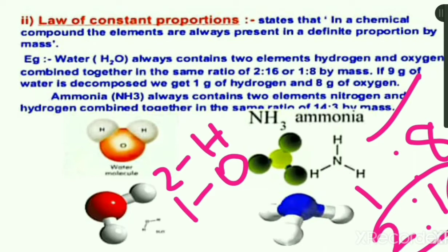The elements of water always combine in the ratio 1:8. If you take 9 grams of water and decompose it, you get 1 gram of hydrogen and 8 grams of oxygen.